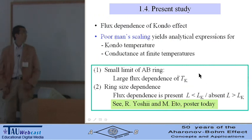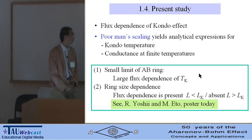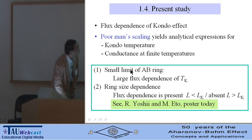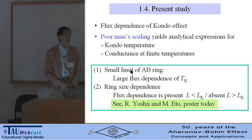In the present study, we examine the flux dependence of the Kondo effect using the Poor-man scaling. We obtain analytical expressions for the Kondo temperature and conductance at finite temperatures. First, I examine the small limit of the AB ring, and we show the large flux dependence of the Kondo temperature.